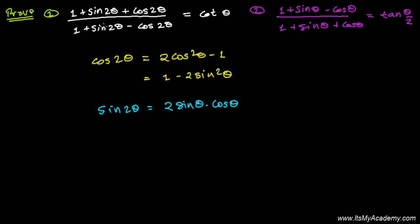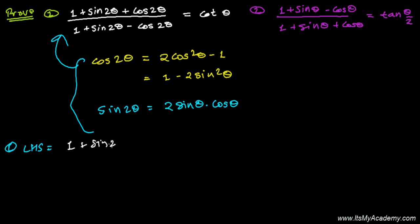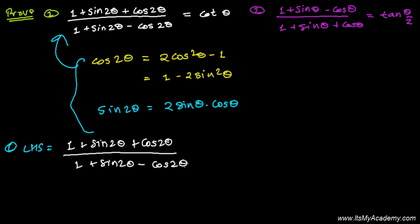Now let's see which formula we have to use. We have three formulas, so which one do we need to use here? Let's write the left-hand side of question number 1. Our left-hand side is: (1 + sin 2θ + cos 2θ) divided by (1 + sin 2θ − cos 2θ). Do we have any formula for 1 + sin 2θ directly?